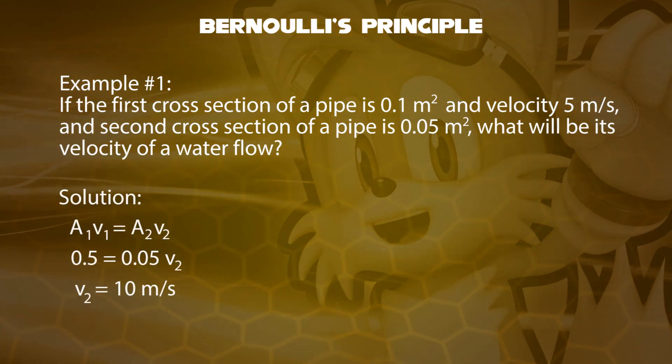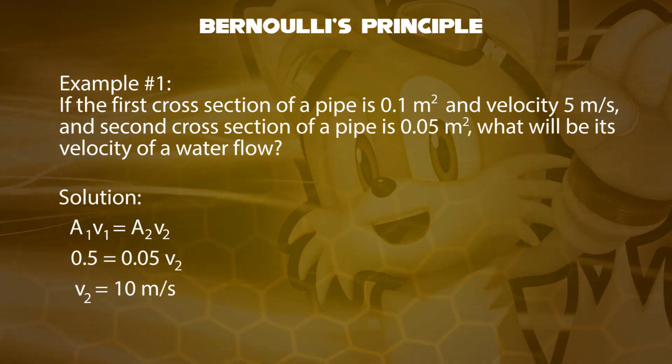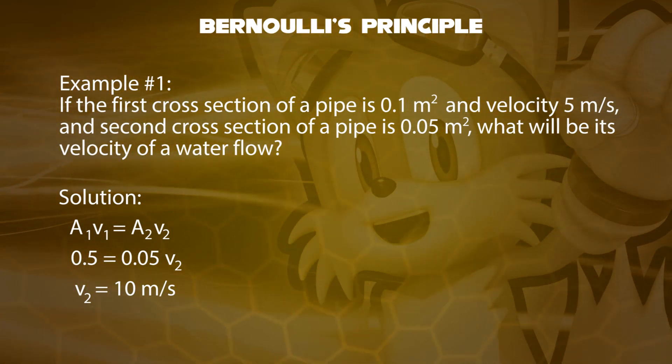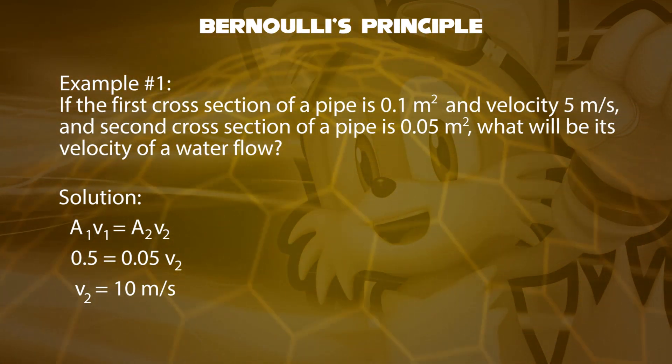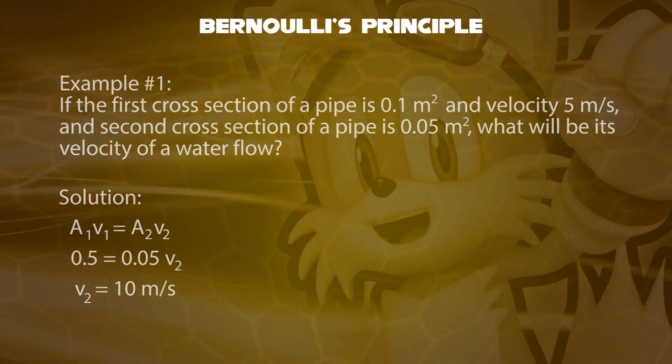When you solve, we get the second velocity: 10 meters per second. The velocity becomes high when we reduce the size of a cross-section.